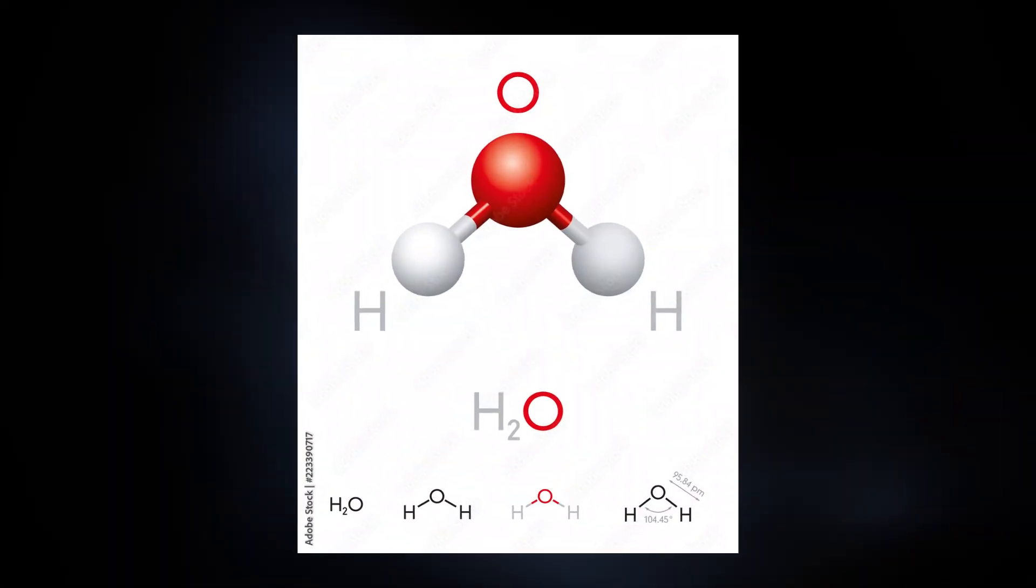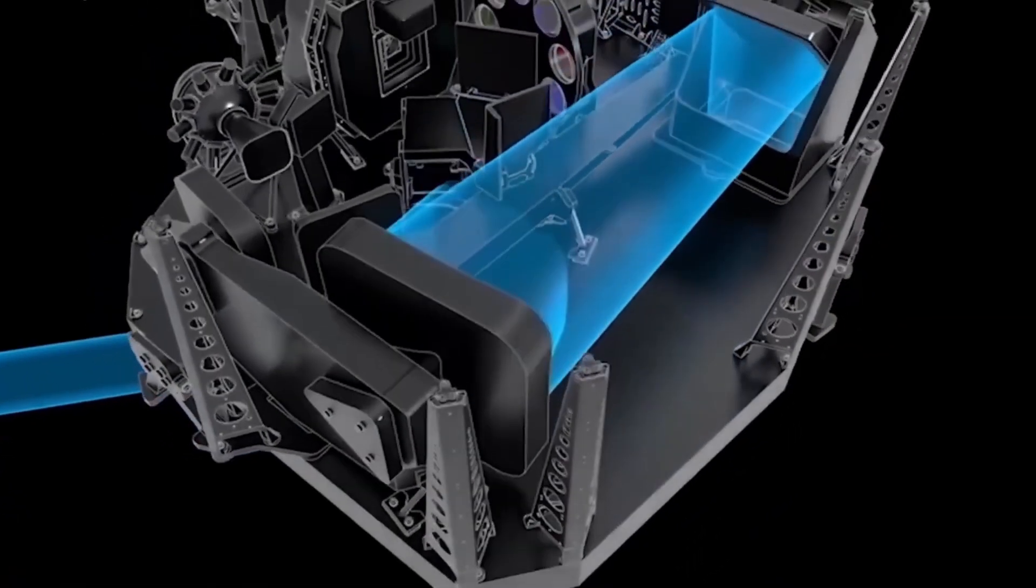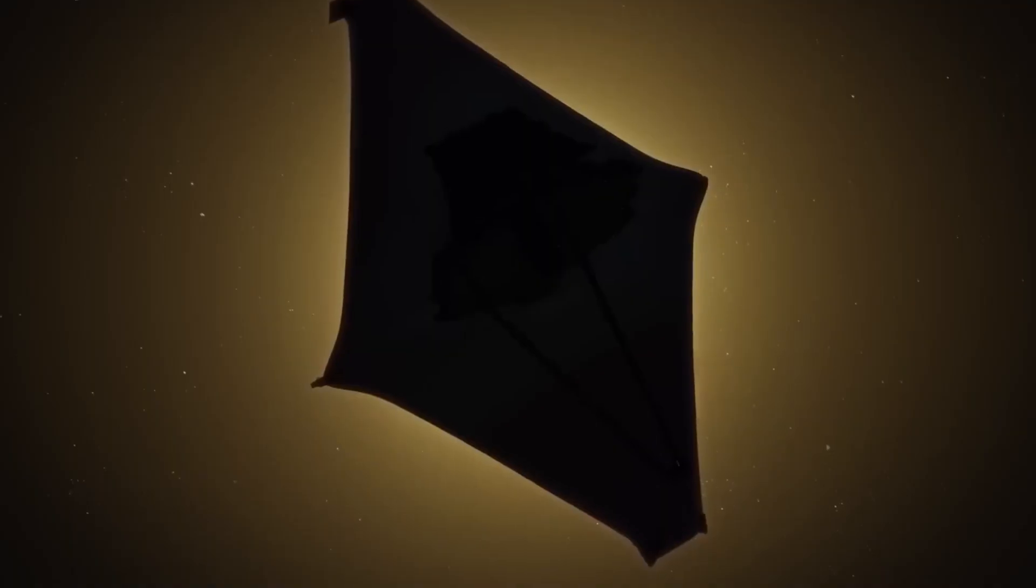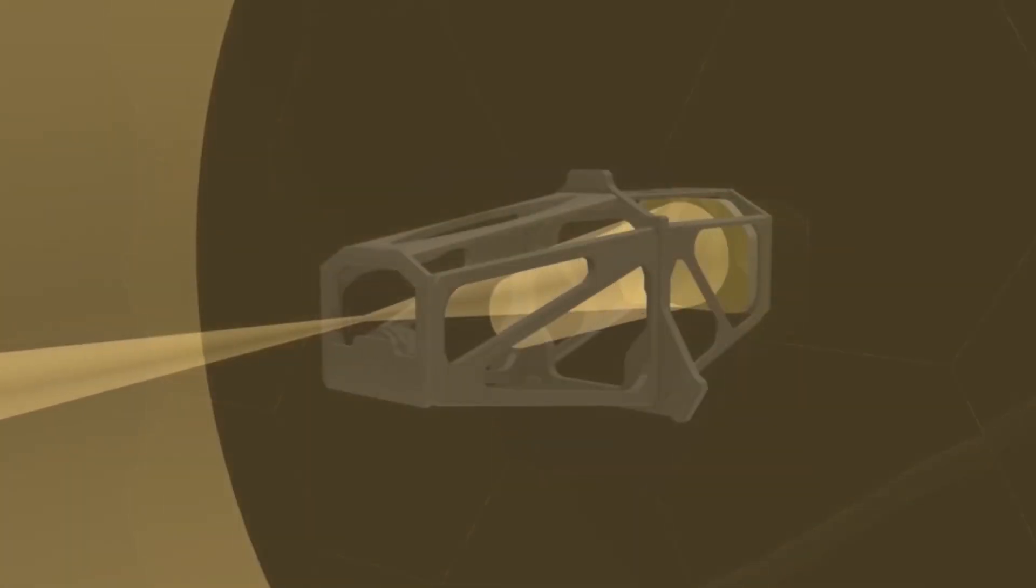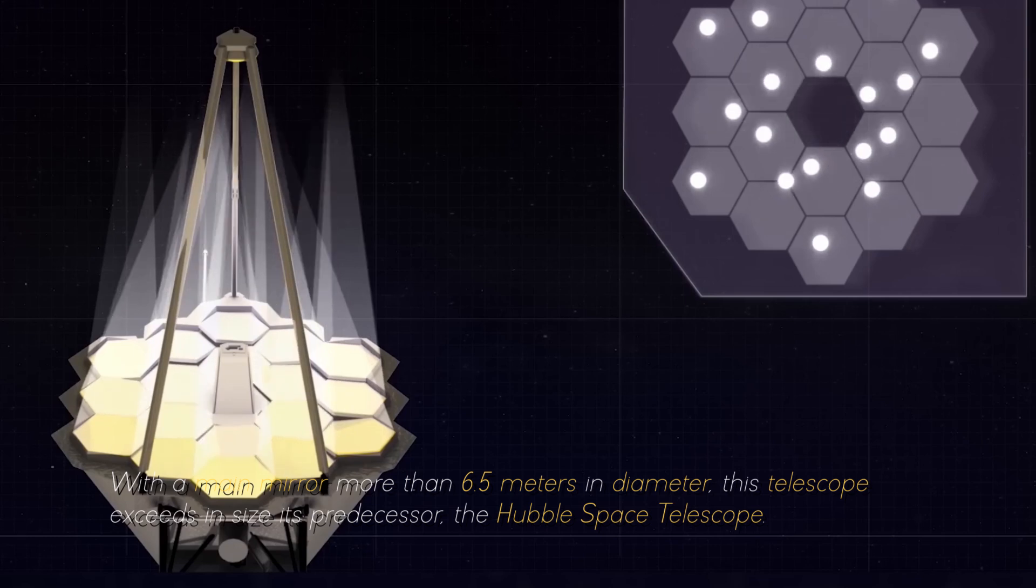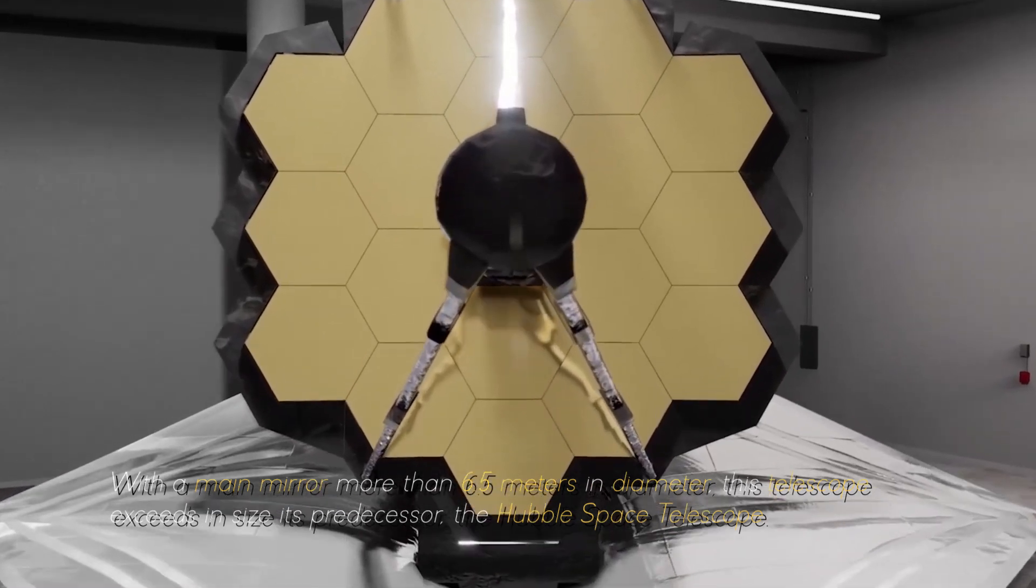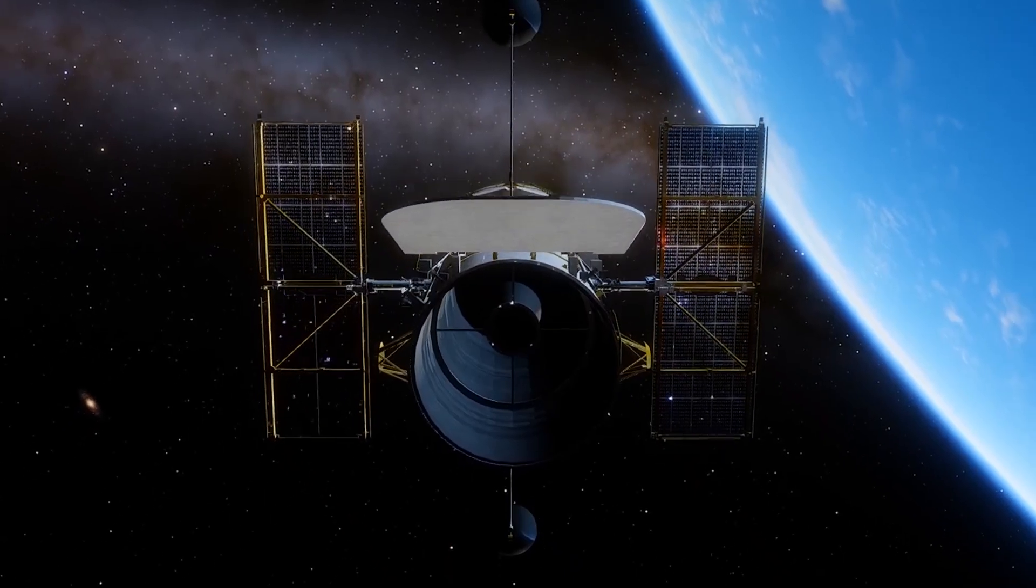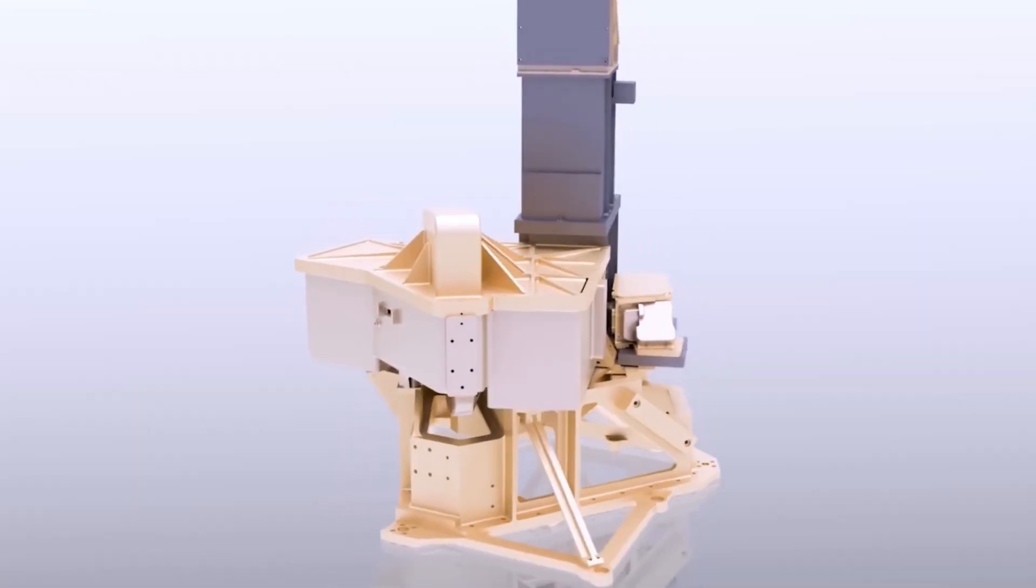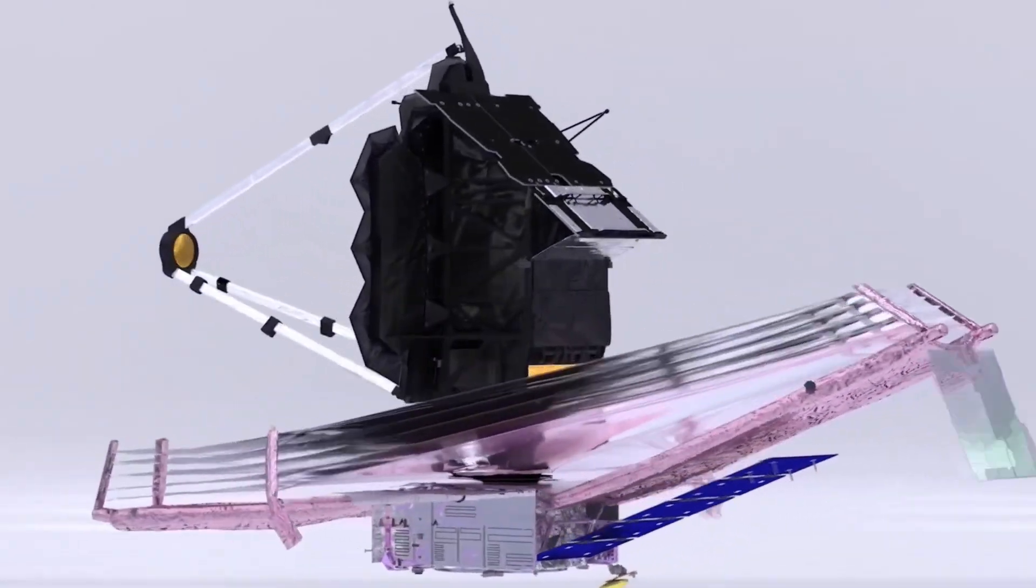What we are seeing here is the chemical signature of water vapor. The James Webb Space Telescope is equipped with an array of advanced scientific instruments carefully designed to observe the universe at an unprecedented range of wavelengths. With a main mirror more than 6.5 meters in diameter, this telescope exceeds its predecessor, the Hubble Space Telescope.